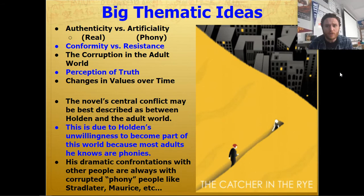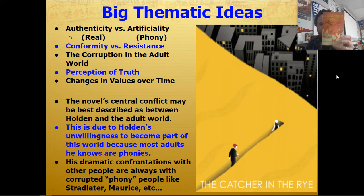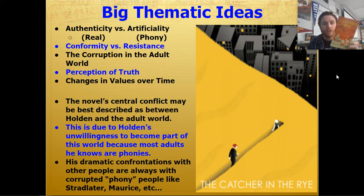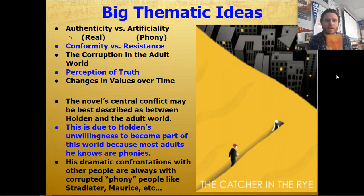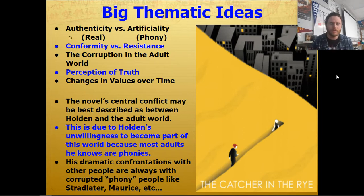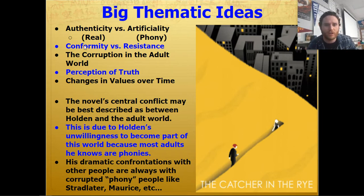What are some of the big thematic ideas in The Catcher in the Rye? Authenticity versus artificiality. Holden is keenly sensitive to people that are phony or fake, artificial, people that put on a show. They're posers. He wants something real, something authentic, which is hard to find in this world.